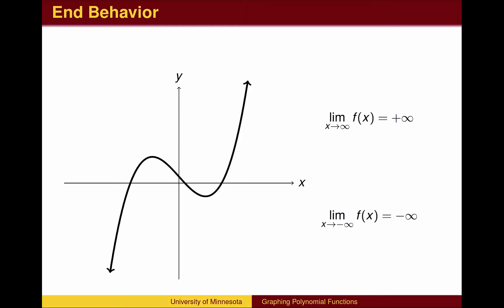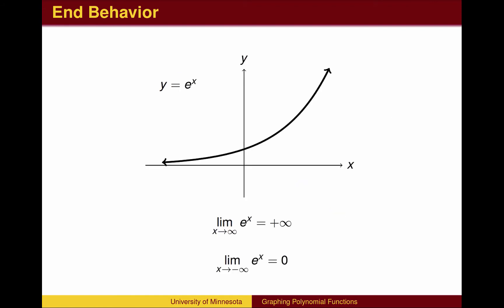As x goes to the left, the y-value is going down fast. It may be the case that a function approaches a specific value. Here is a graph of the exponential function. This is not a polynomial, but does illustrate the concept of end behavior.